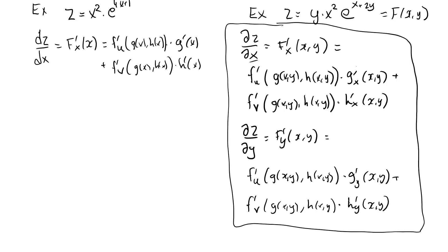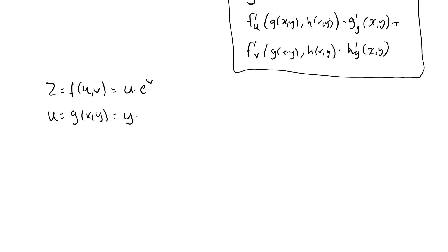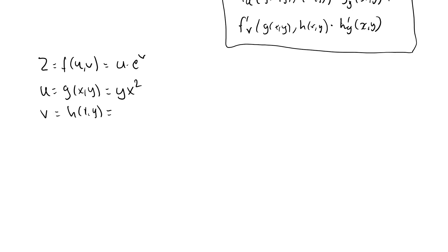Let's try it out with our example. z equals f(u,v) which is u times e to the v. u equals g(x,y) which is y times x squared. v equals h(x,y) which is x plus 2y. The composite function z(x,y) is y x squared times e to the x plus 2y.